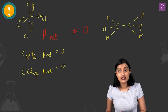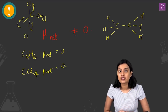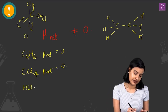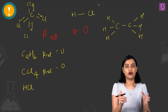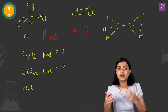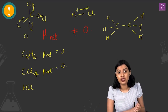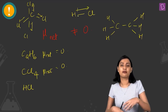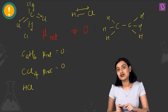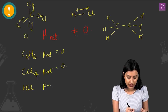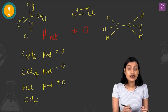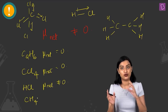For HCl, there is a bond between hydrogen and chlorine. Chlorine is more electronegative and pulls the bond pair towards itself. There is only one bond moment, and since it cannot cancel with anything, μ_net ≠ 0. HCl is polar.